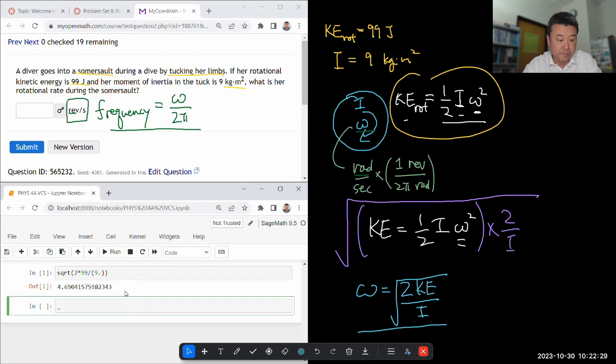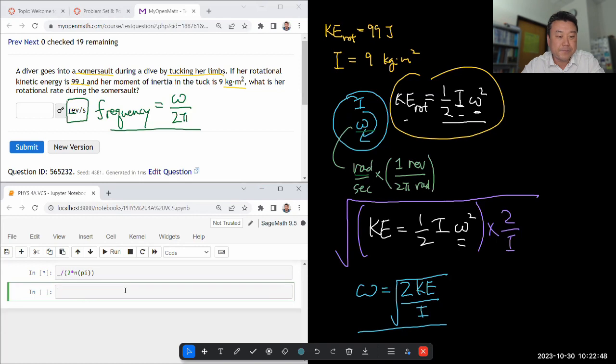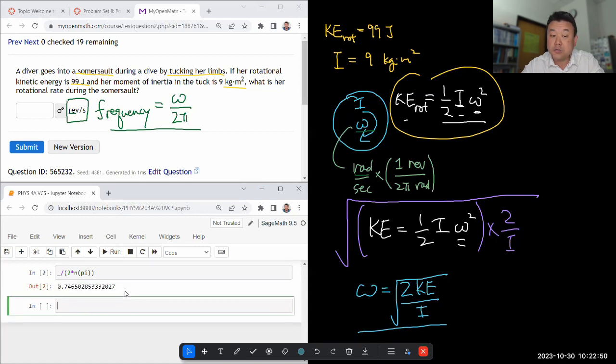So I have to divide this by 2 pi. So let me take the previous result. The underscore is the SAGE math syntax, meaning previous output. Divided by 2 times numerical approximation of pi. This will make sure that it actually divides by 2 pi.